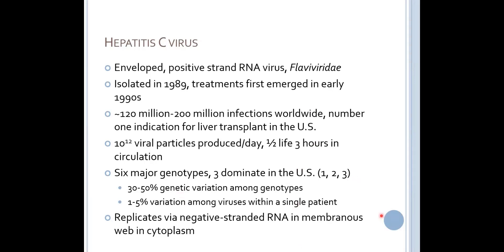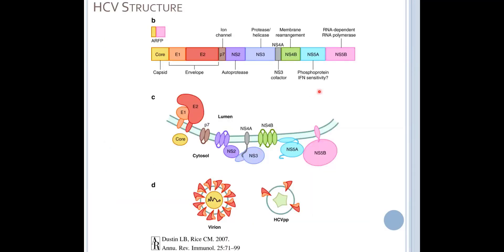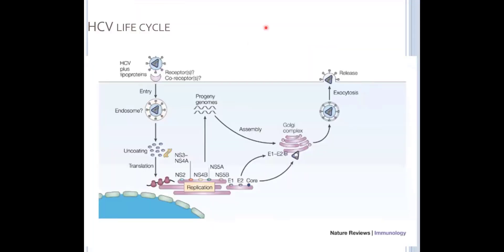It has this interesting replication — it's the only virus I know that's described to replicate via negative-stranded RNA and a membranous web in the cytoplasm. Like coronavirus, which I'll mention at the end of the talk, it's translated as a large polypeptide because it's a single-stranded, positive-stranded RNA virus. Each of these proteins comes out on a single chain that then has to be cleaved, and it makes its own autoprotease to facilitate that cleavage. It has a number of structural proteins like most viruses — an envelope protein, a capsid protein — and then non-structural proteins including its RNA-dependent RNA polymerase and various innate immune managers.